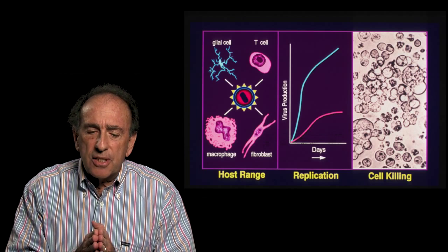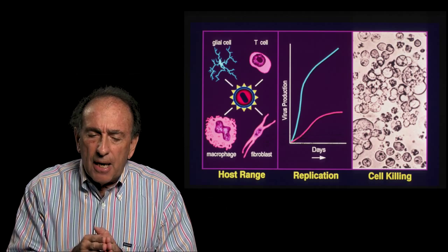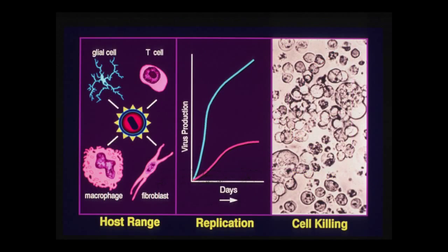What is the nature of these viruses? They can be defined biologically by what cells they infect and how well they grow in them. HIV can differ in its ability to grow in T cells, macrophages, glial cells of the brain, or fibroblasts. When it replicates, it could do so rapidly to high titer — shown in blue — or slowly to low titer. The virus that replicates rapidly to high titer is much more virulent, causing cytopathic effects, and when that virus emerges over time in an individual, that person advances rapidly to AIDS.